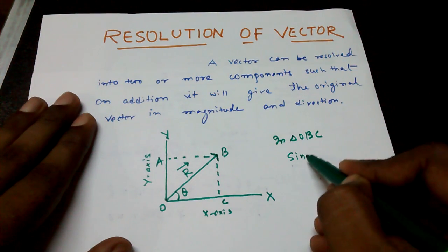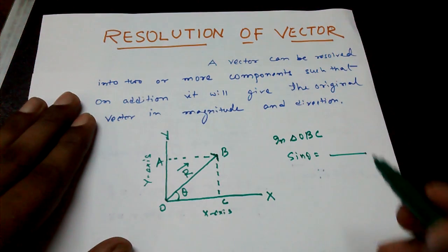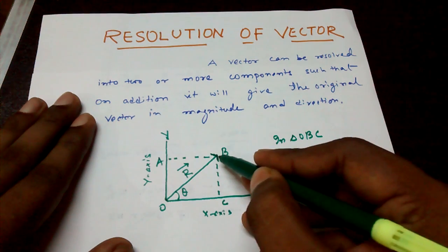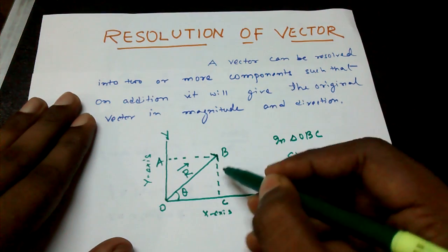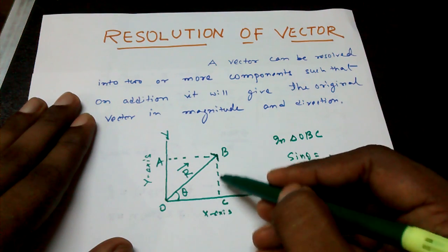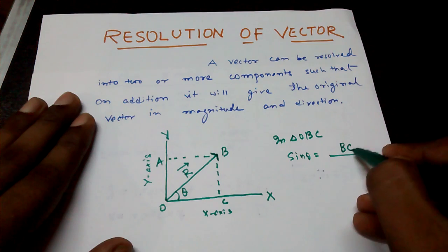Sin theta will be equal to perpendicular by hypotenuse. What is perpendicular? The side just opposite of the angle is the perpendicular. That is BC side.